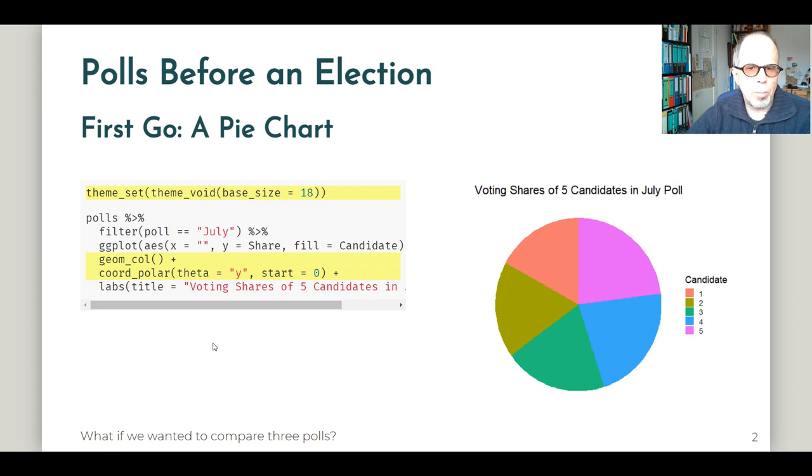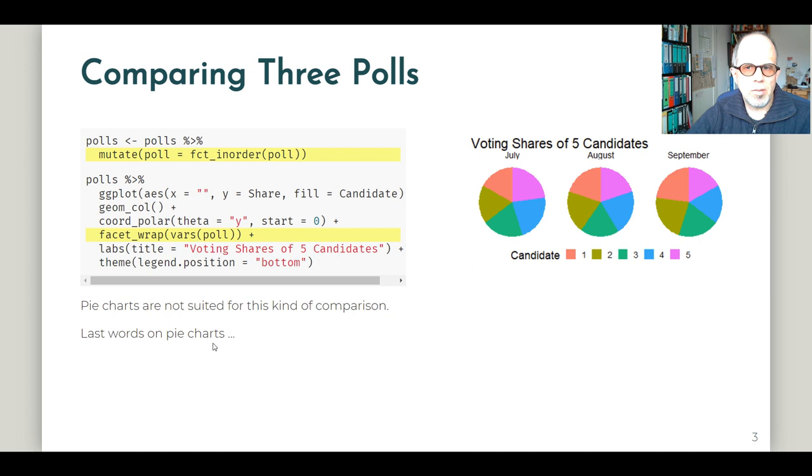Let's see we want to compare three polls for three different months. We're using the same pie chart as before but now we add one line to display the three points in time as facets using the facet_wrap function. And here we have the modern approach with the vars function to specify the variable. We'll see an alternative in a moment. And note also the highlighted code at the top. I'm using the fct_inorder function from the forcats package to change the factor levels of the polls. If I hadn't used that line then the three months would be displayed in alphabetical order with August coming first which is not what we want here.